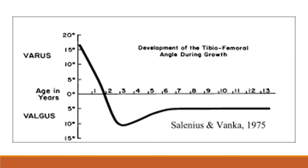Now we will discuss the development of the tibiofemoral angle during growth, as described by Salineus and Vanga in 1975. At birth, the normal angle is 15 degrees varus. By the age of 2 years it reaches 0 degrees, and by the age of 3 years it reaches the maximum valgus angle of about 10 degrees.